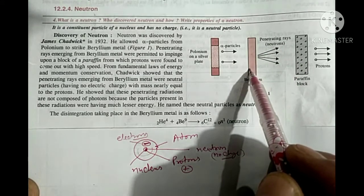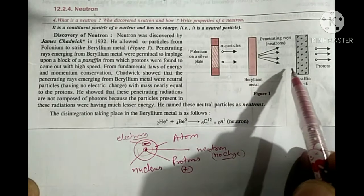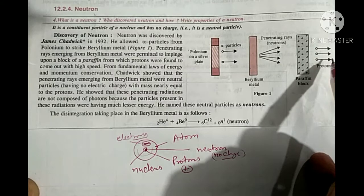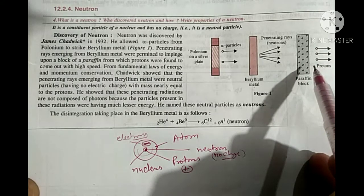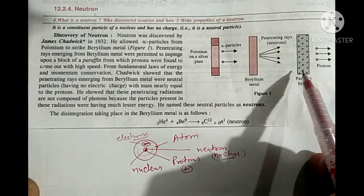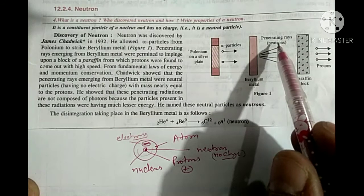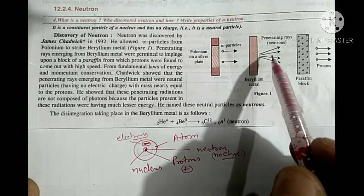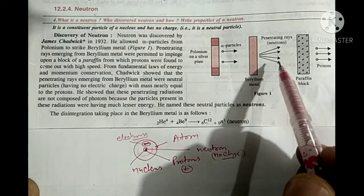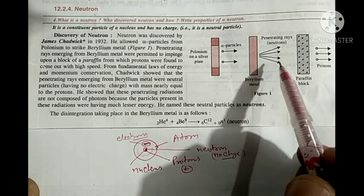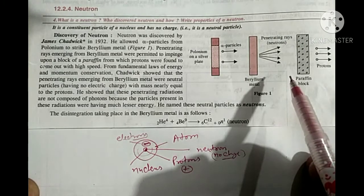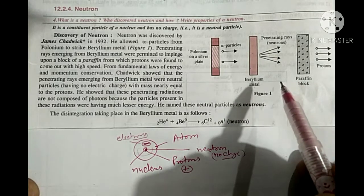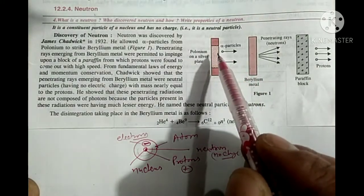The penetrating rays emerging from beryllium metal were permitted onto a block of paraffin from which protons were found to come out with high speeds. From fundamental laws of energy and momentum conservation, Chadwick showed that the penetrating rays emerging from beryllium metal were neutral particles, meaning they have no electric charge, with mass nearly equal to the mass of protons. He showed that these penetrating radiations were not composed of photons because the alpha particles present in these radiations were having much lesser energy. He named these neutral particles as neutron.